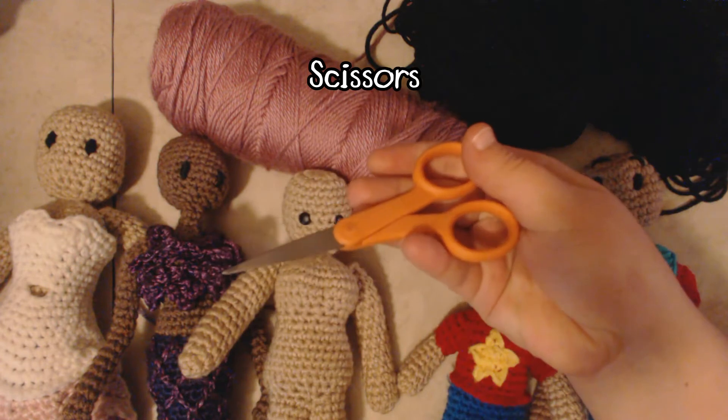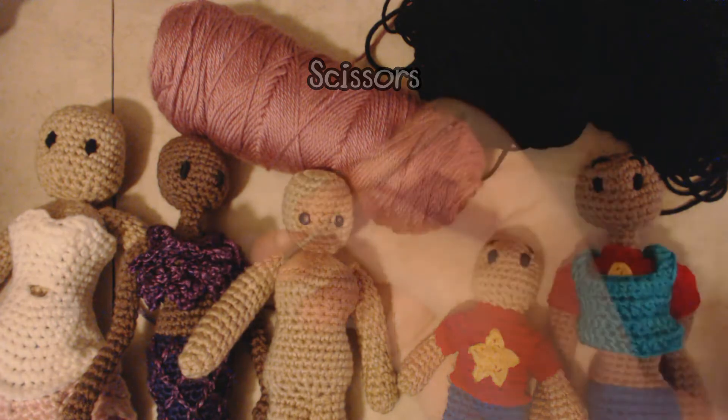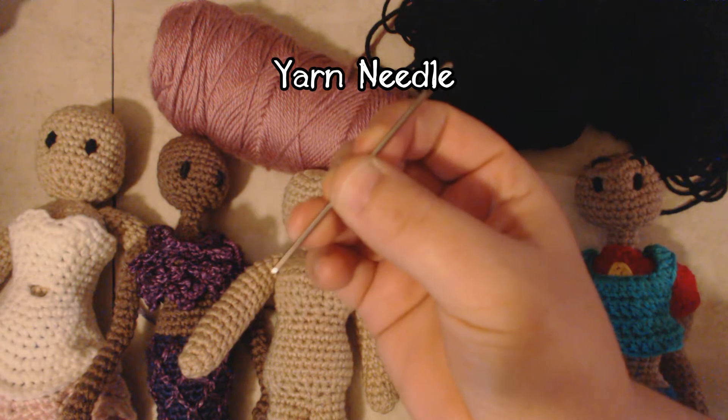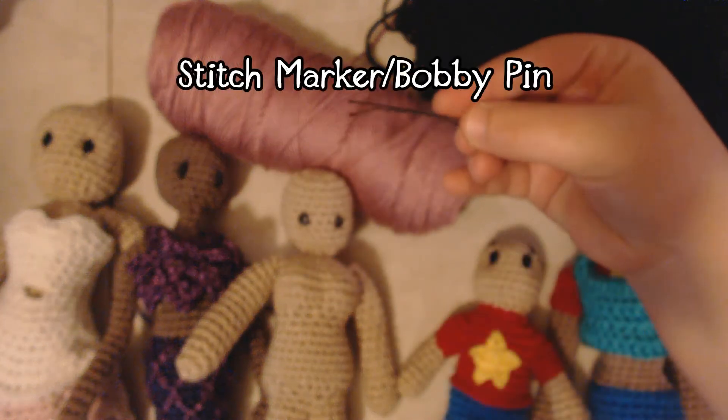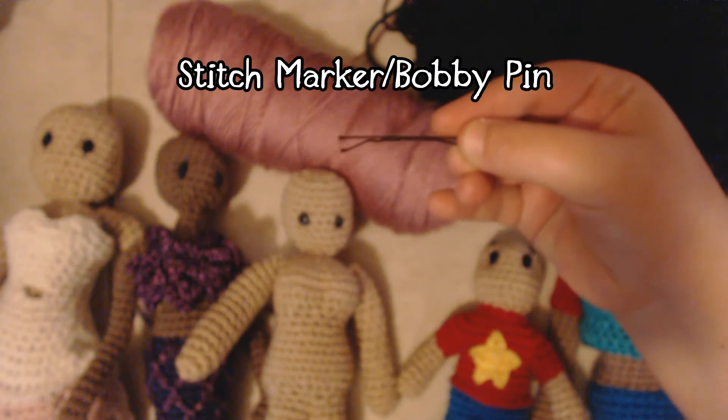You'll also need a pair of scissors to cut off your yarn, a yarn needle to sew in your ends and to sew the wig cap onto your doll, and if you like you can use a stitch marker or bobby pin to keep track of the first stitch of your row.